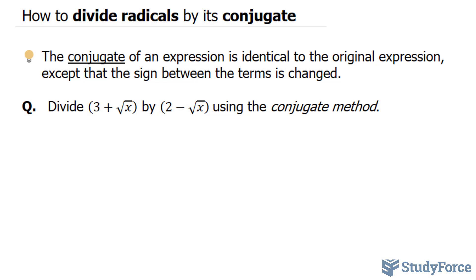The question is: divide 3 plus the square root of x by 2 minus the square root of x using the conjugate method. Let's rewrite this in a familiar form: 3 plus the square root of x over 2 minus the square root of x.